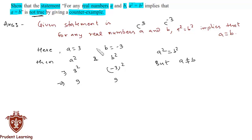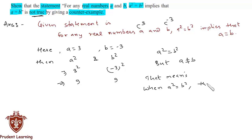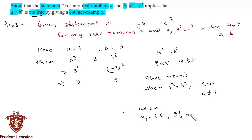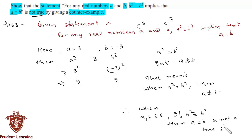That means when a² is equal to b², a is not necessarily equal to b. Therefore, when a and b are real numbers — that is, a and b belong to ℝ — if a² = b² then a = b is not a true statement. So this is what we were supposed to prove.